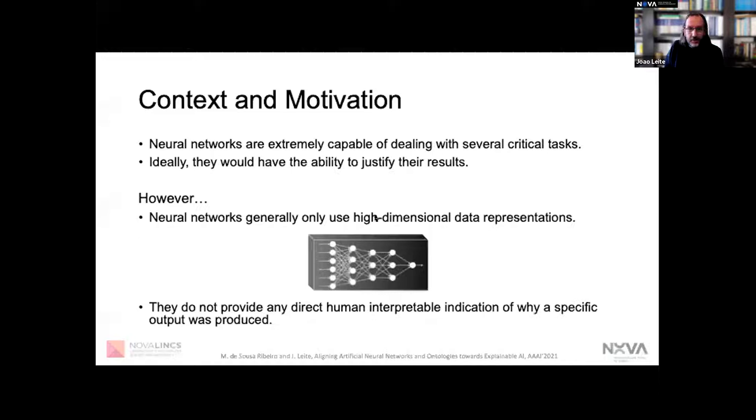As it turns out, neural networks only use symbolic representations based on a high dimensional Euclidean space, which has no obvious associated declarative meaning. So we're left without a direct human interpretable indication of why a specific output was produced.